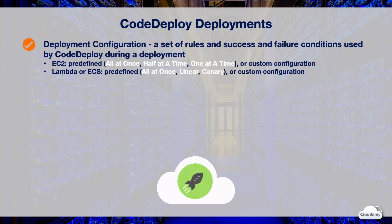A deployment configuration is a set of rules and success or failure conditions used by CodeDeploy during a deployment. For EC2 deployments, the deployment configuration specifies the number of instances or the percentage of total instances that must remain available at any time during a deployment. You can use one of three predefined deployment configurations: all at once, half at a time, and one at a time. Alternatively, you can create a custom deployment configuration.